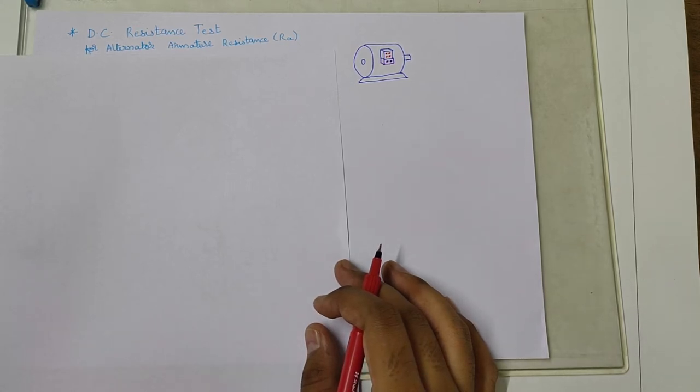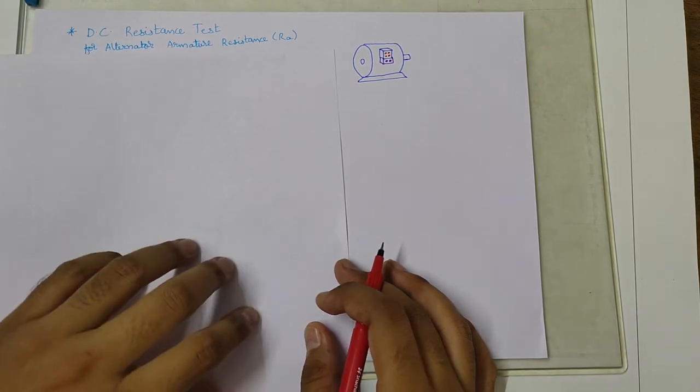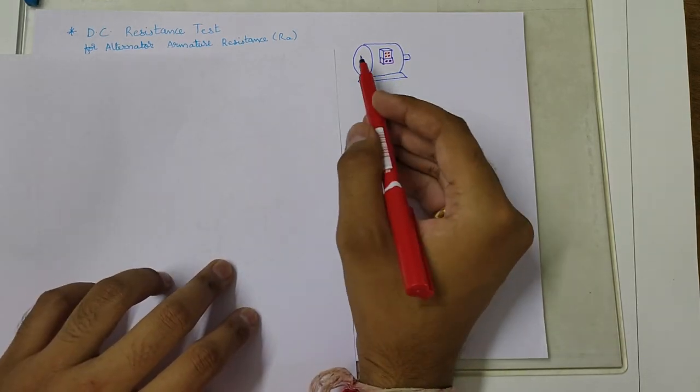Hello friends, in this video we are going to learn how to measure the resistance of alternator armature winding. This method is called the armature resistance test or DC resistance test.